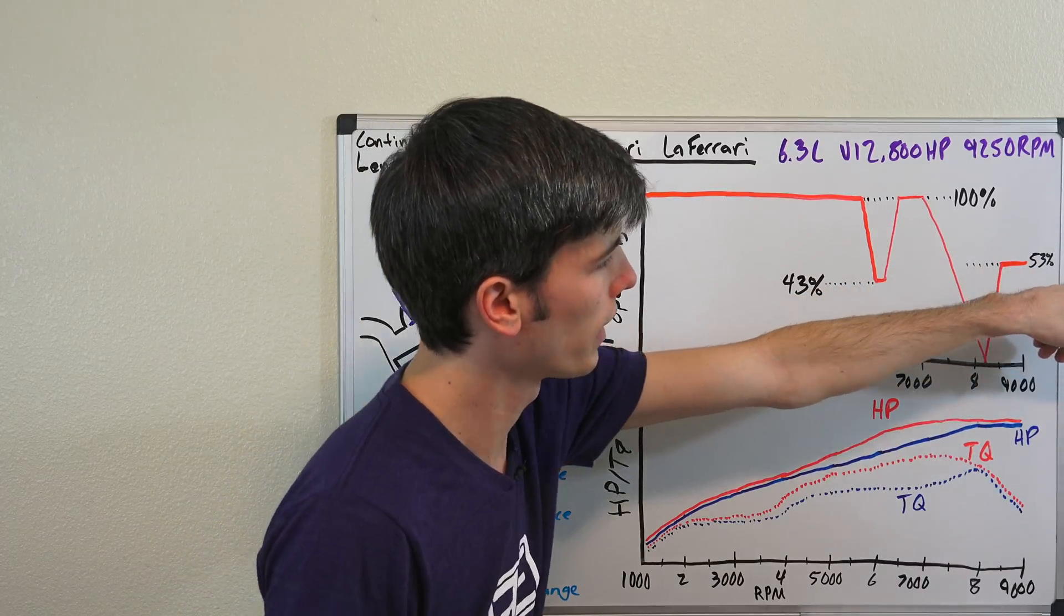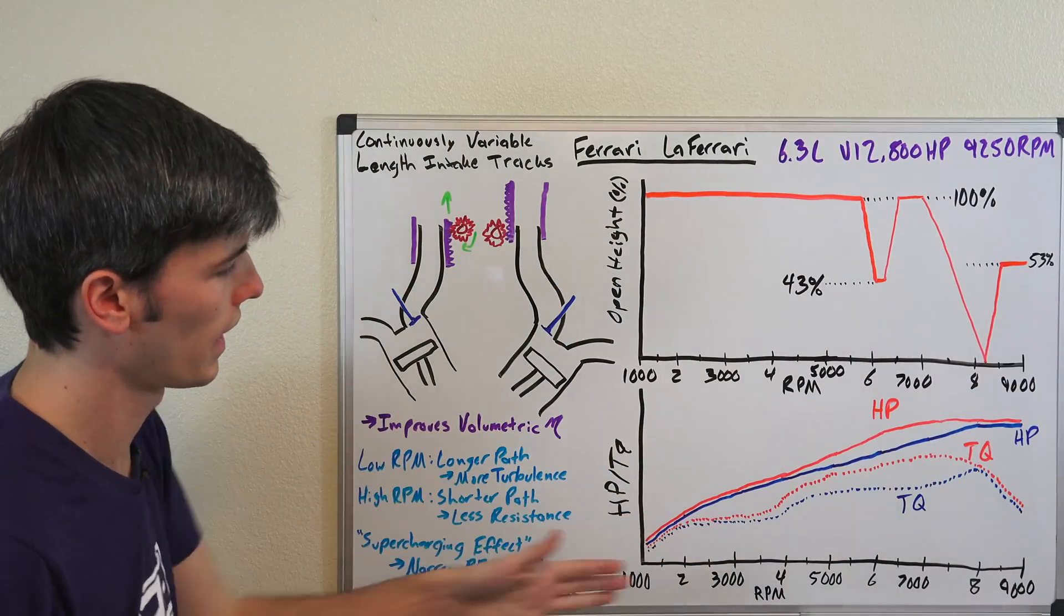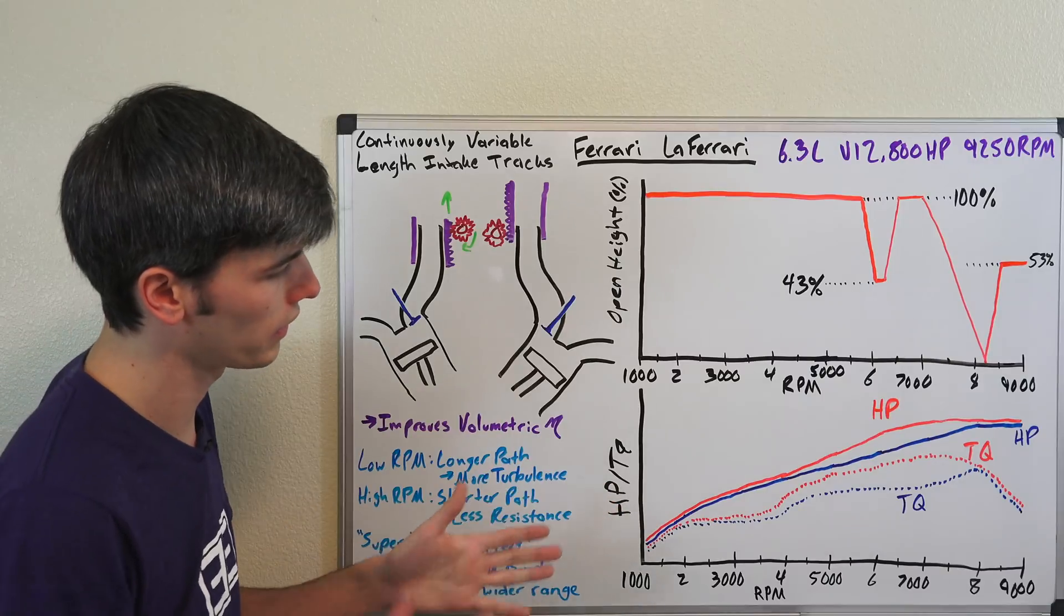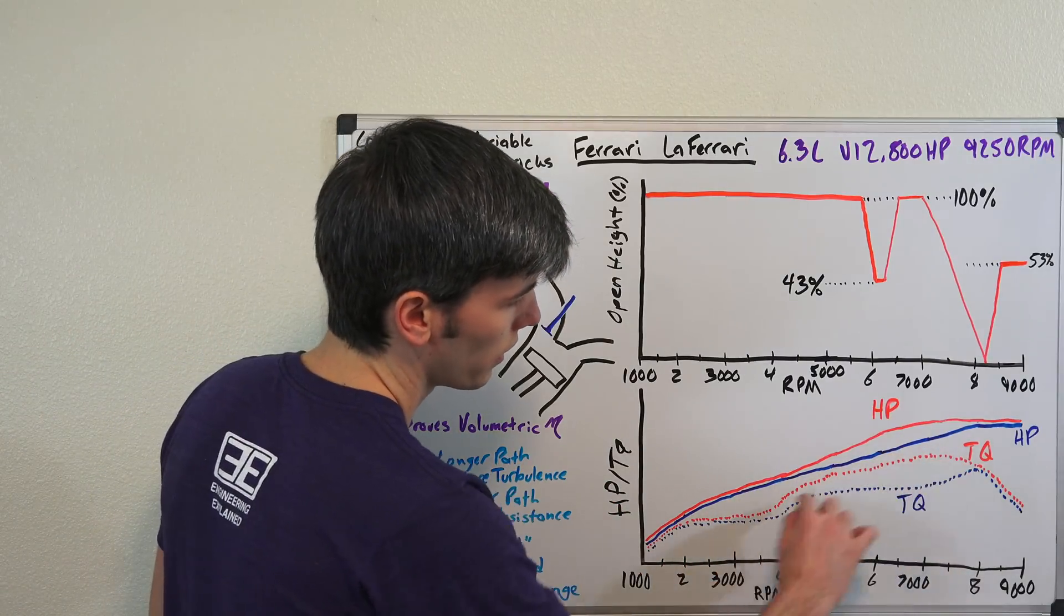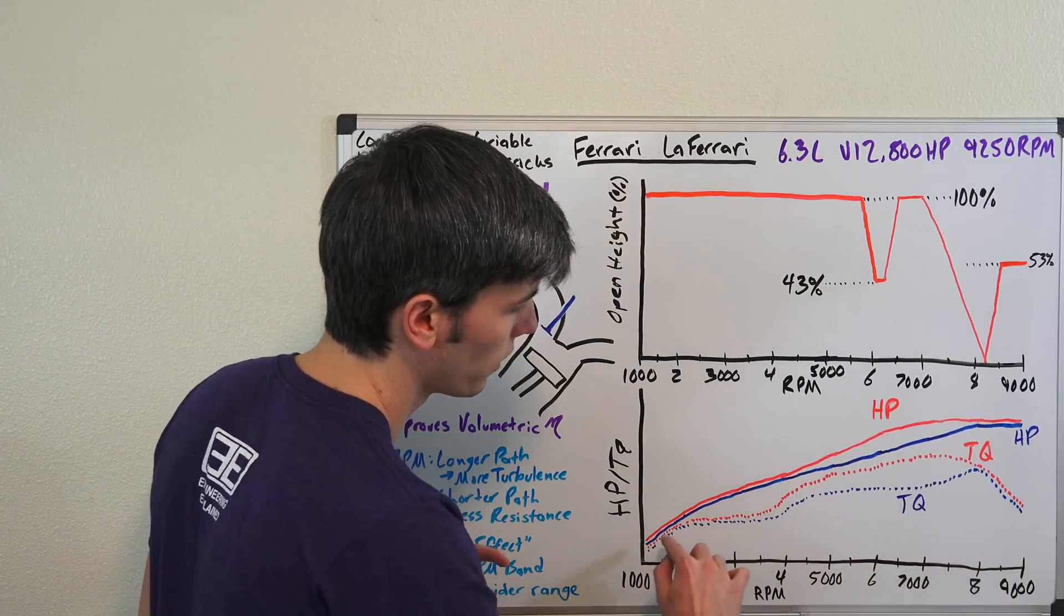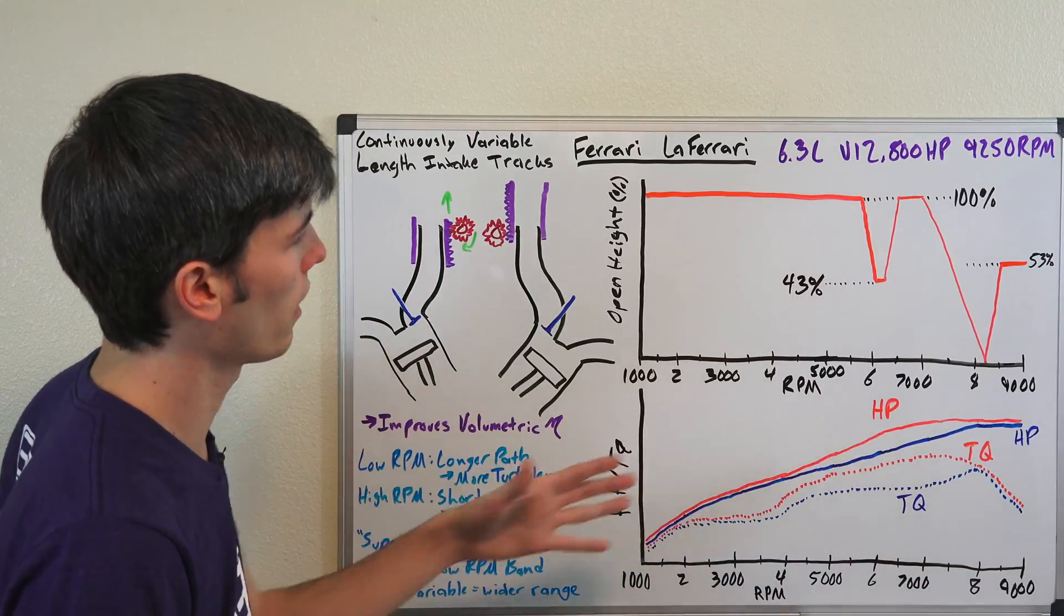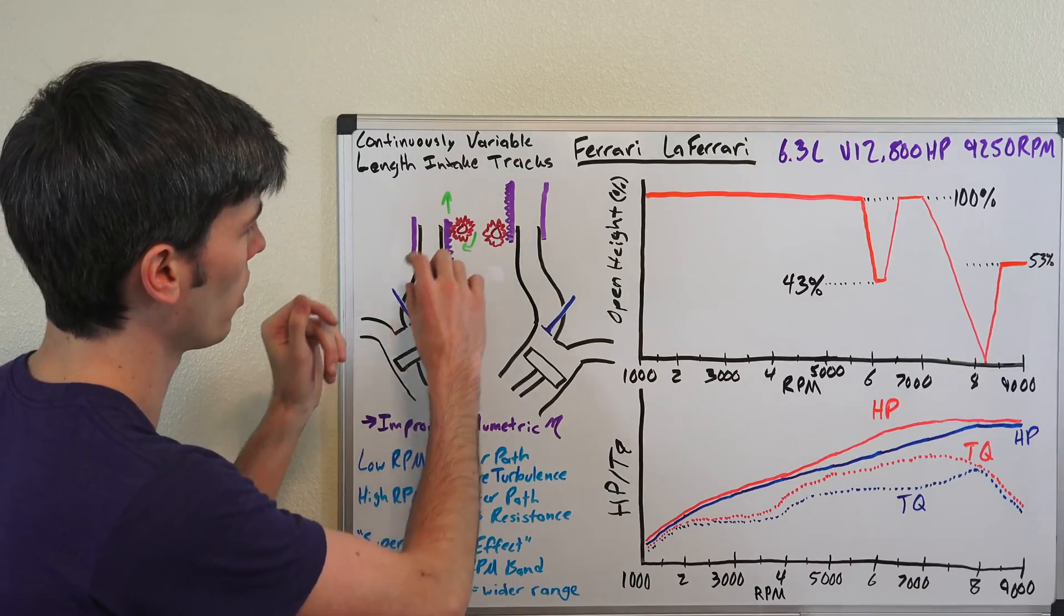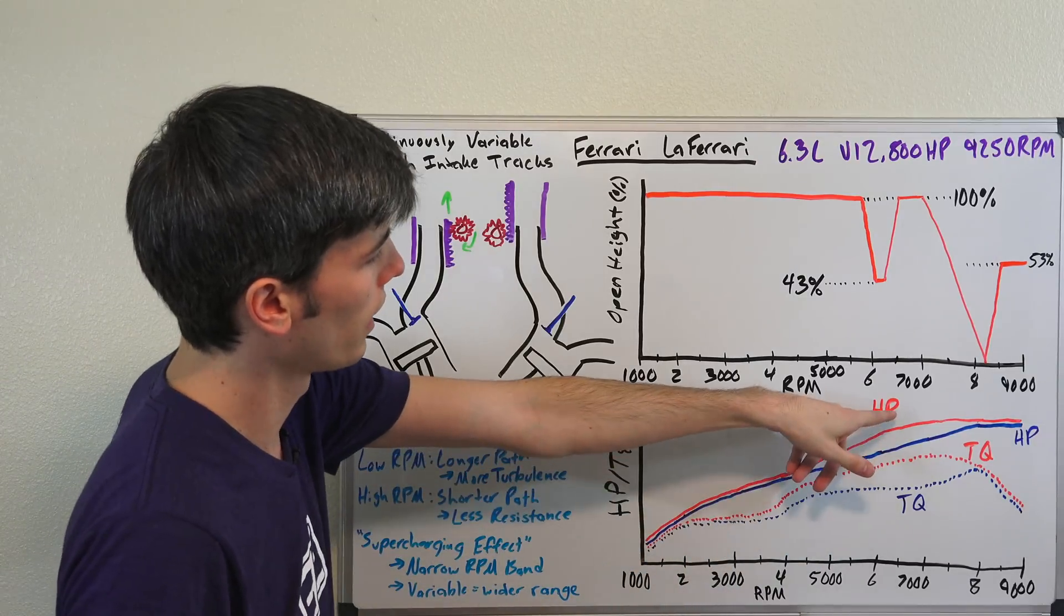And so what's really cool about this, if you look at a graph of the horsepower and the torque you can see in blue here we're drawing the torque, the dotted line, and then the horsepower, the straight line. And so this is if you didn't have, you just had a set intake ratio or a set intake length. And then the dotted path in red and the line in red here is if you're able to vary that using this setup.